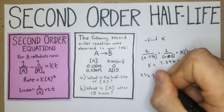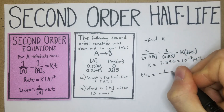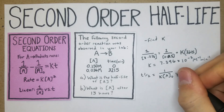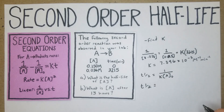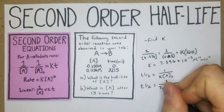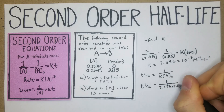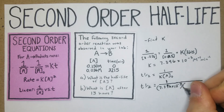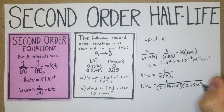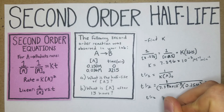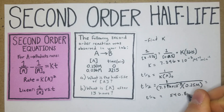Now we bring it down to the second-order half-life formula: t½ = 1 / (k × [A]₀). Plugging in: t½ = 1 / (7.396 × 10⁻³ × 0.25 M). The half-life works out to 540.83 minutes.